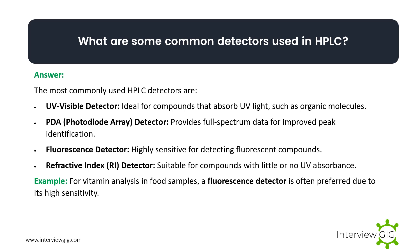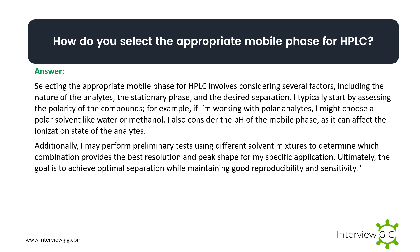What are some common detectors used in HPLC? The most commonly used HPLC detectors are: UV-visible detector, ideal for compounds that absorb UV light such as organic molecules; PDA detector, which provides full spectrum data for improved peak identification; fluorescence detector, highly sensitive for detecting fluorescent compounds; and refractive index detector, suitable for compounds with little or no UV absorbance. Example: for vitamin analysis in food samples, a fluorescence detector is often preferred due to its high sensitivity.